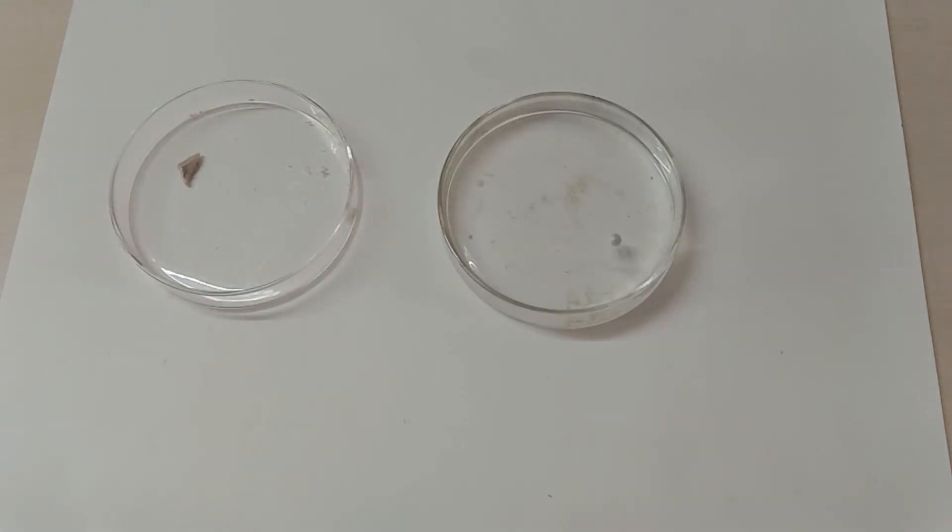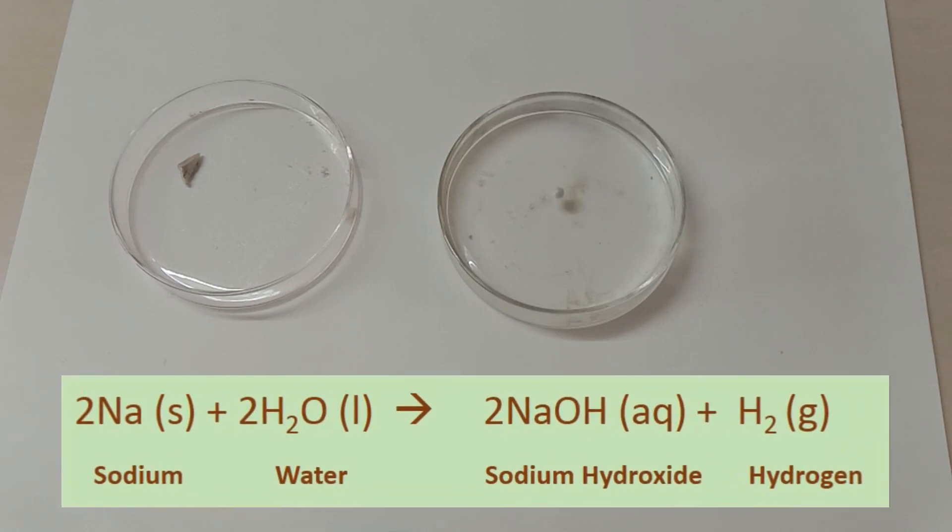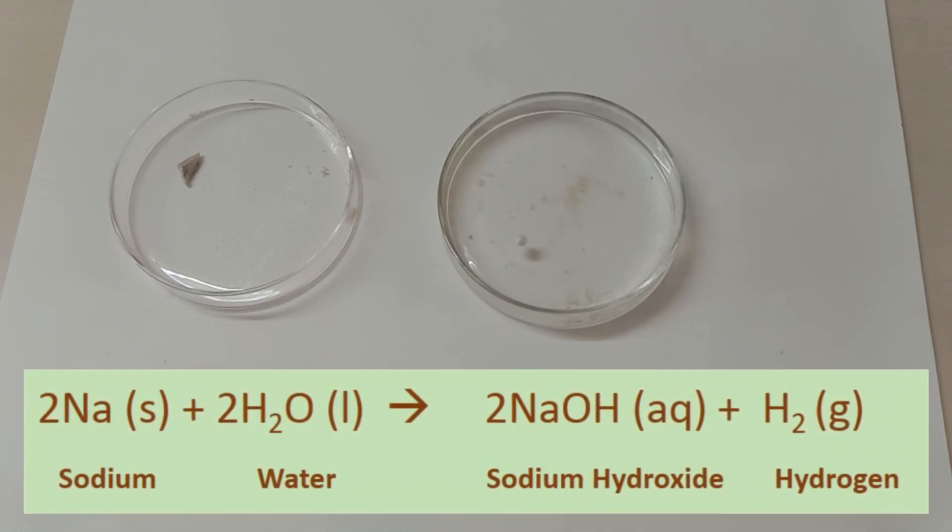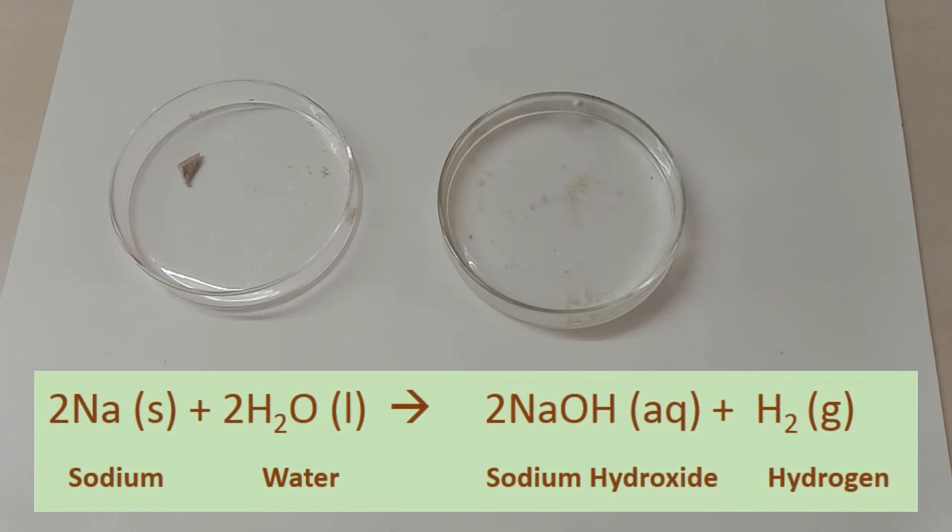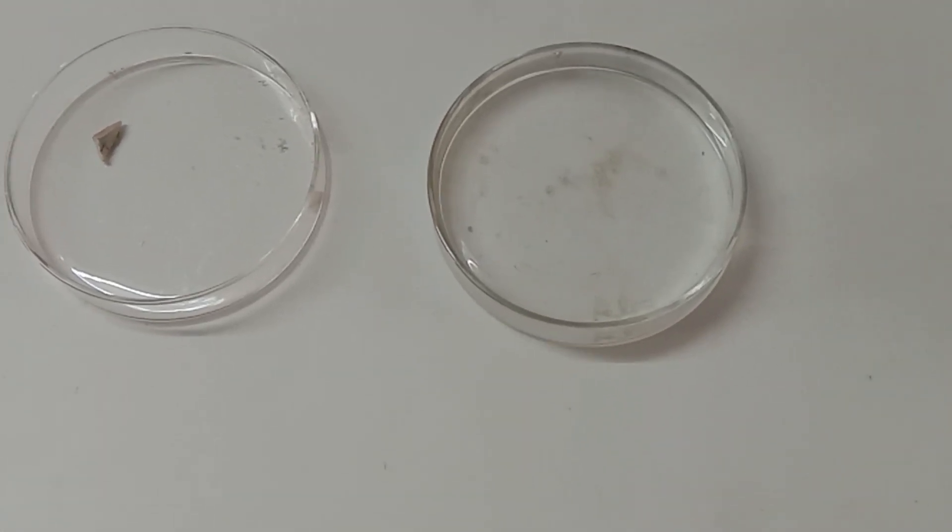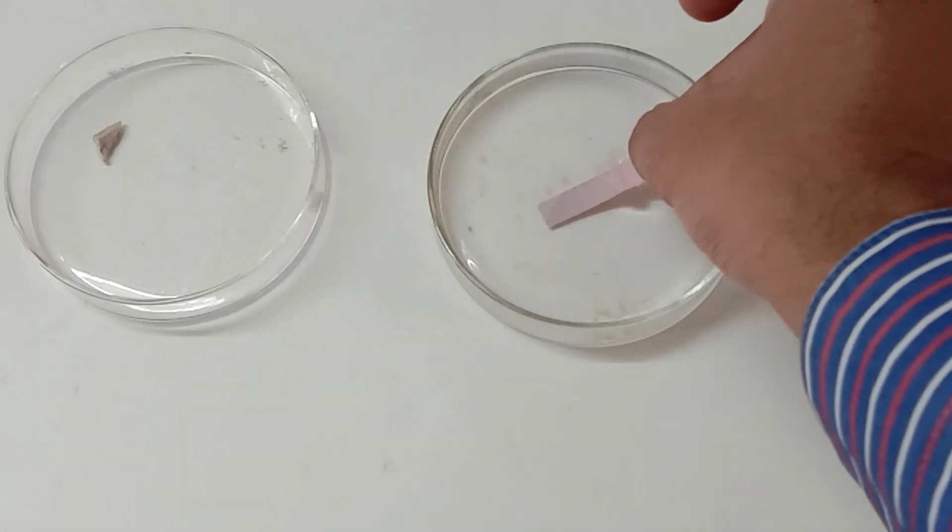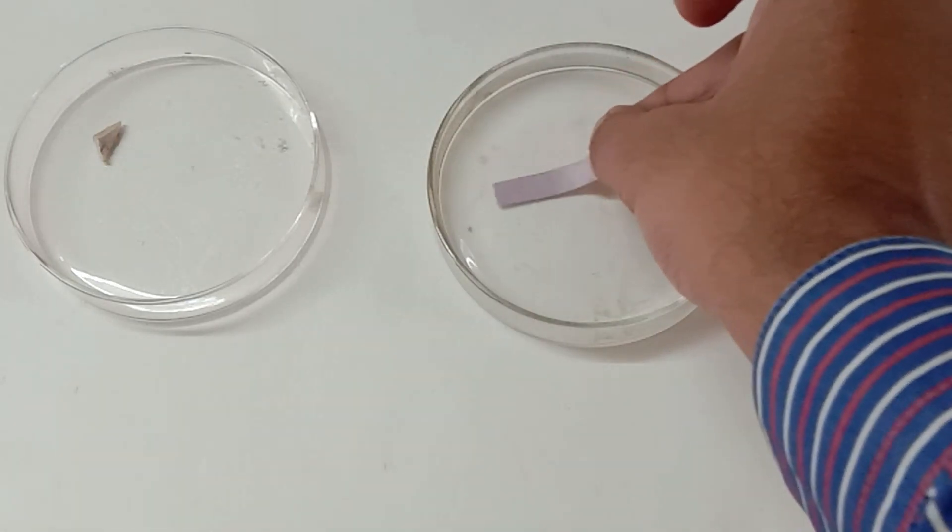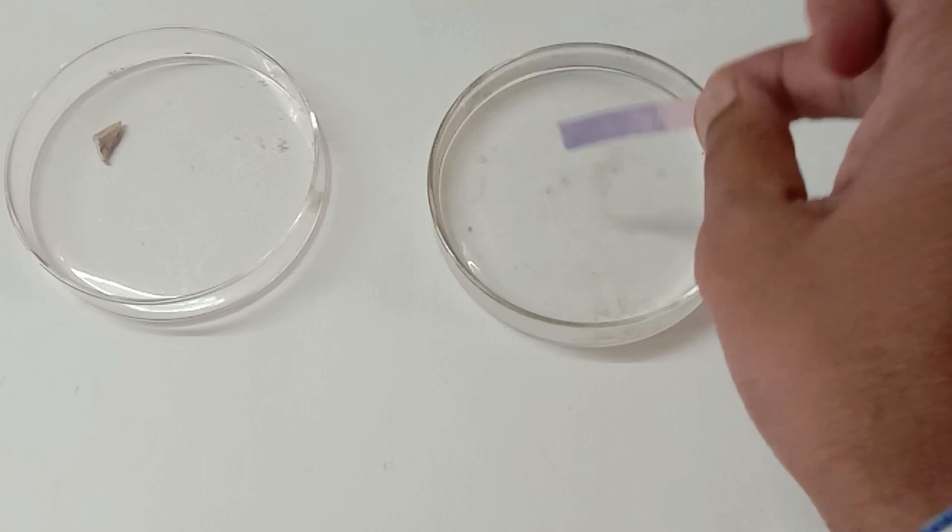The reaction between sodium and water is vigorous. Sodium hydroxide is formed, and hydrogen gas will also be formed. This base is turning the red litmus paper into blue.